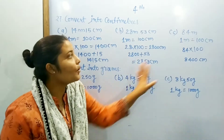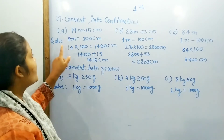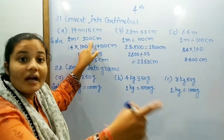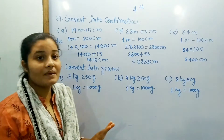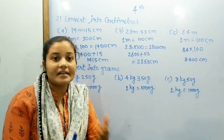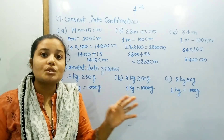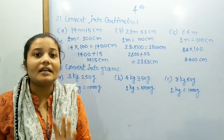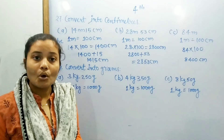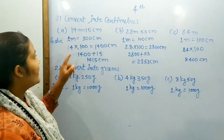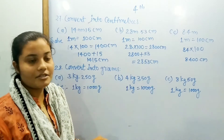In this question, we know that one meter is equal to 100 cm. When we have to measure, we will multiply — and we will multiply the meter value by 100.